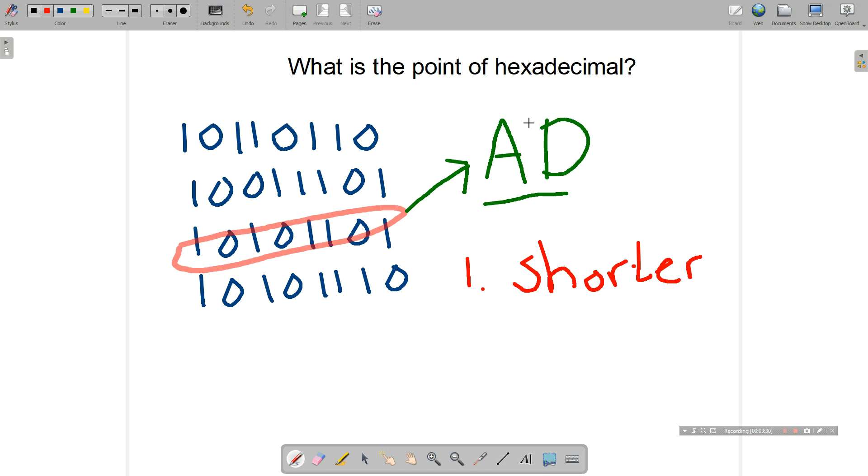The second advantage of hexadecimal is that it is easier to remember or recognize because of the fact that it includes letters as well as numbers.